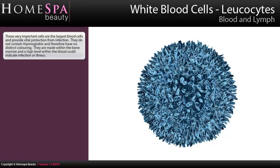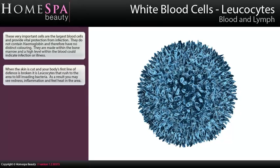White Blood Cells. These very important cells are the largest blood cells and provide vital protection from infection. They do not contain haemoglobin and therefore have no distinct colouring. They are made within the bone marrow and a high level within the blood could indicate infection or illness. When the skin is cut and your body's first line of defence is broken, it is leukocytes that rush to the area to kill invading bacteria. As a result, you may see redness, inflammation and feel heat in the area.